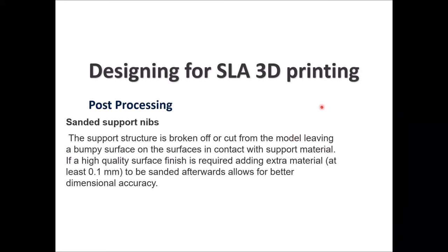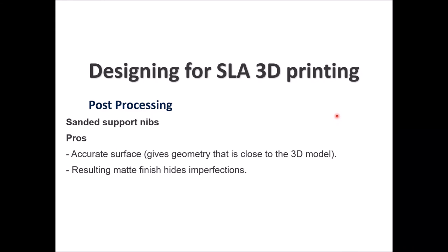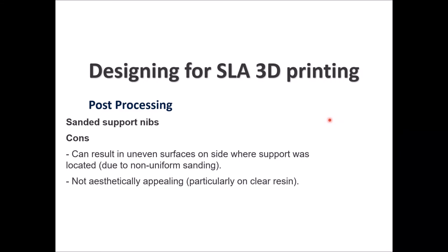Another post-processing option is sanded support nips. You remove the support structure and then sand the exposed surface with sandpaper to make it cleaner. The good sides are that you get accurate surfaces close to the 3D model and a matte finish that hides imperfections. The bad sides are that you can have uneven surfaces where the support was located, and it is not very attractive aesthetically, especially with clear resin.